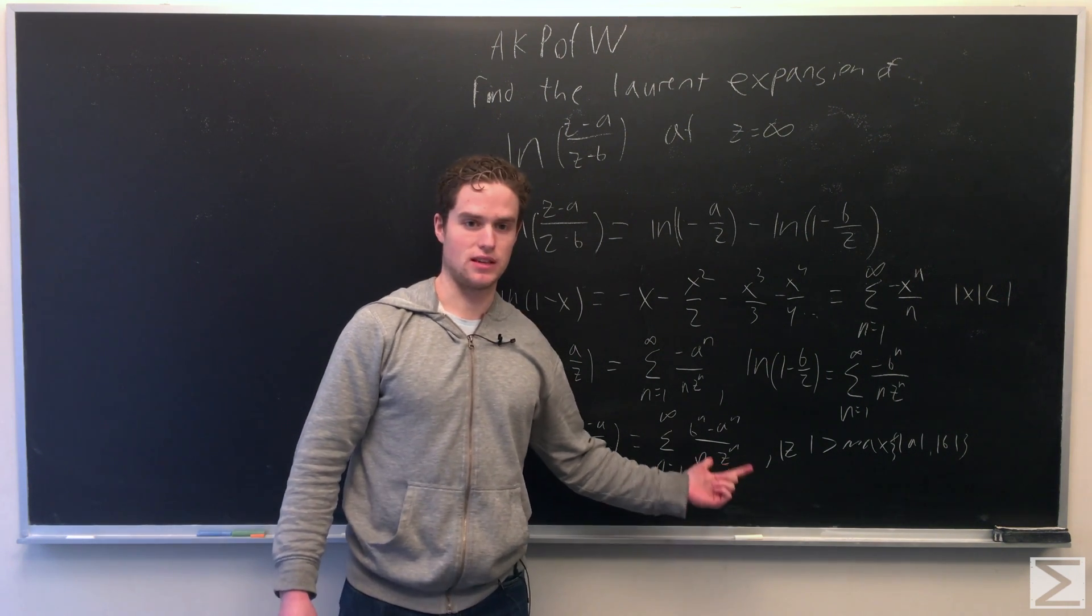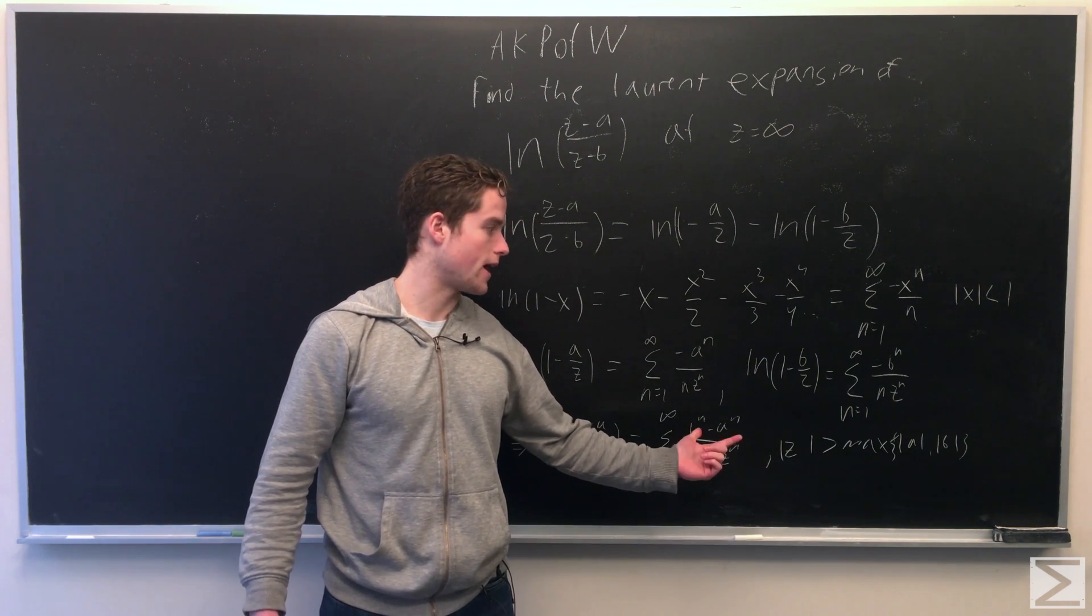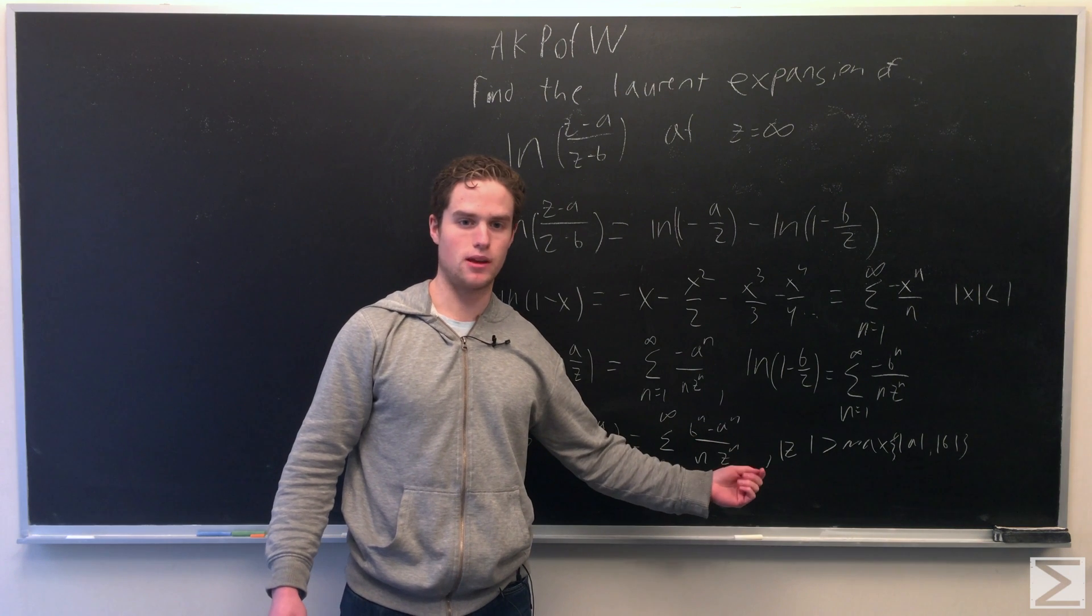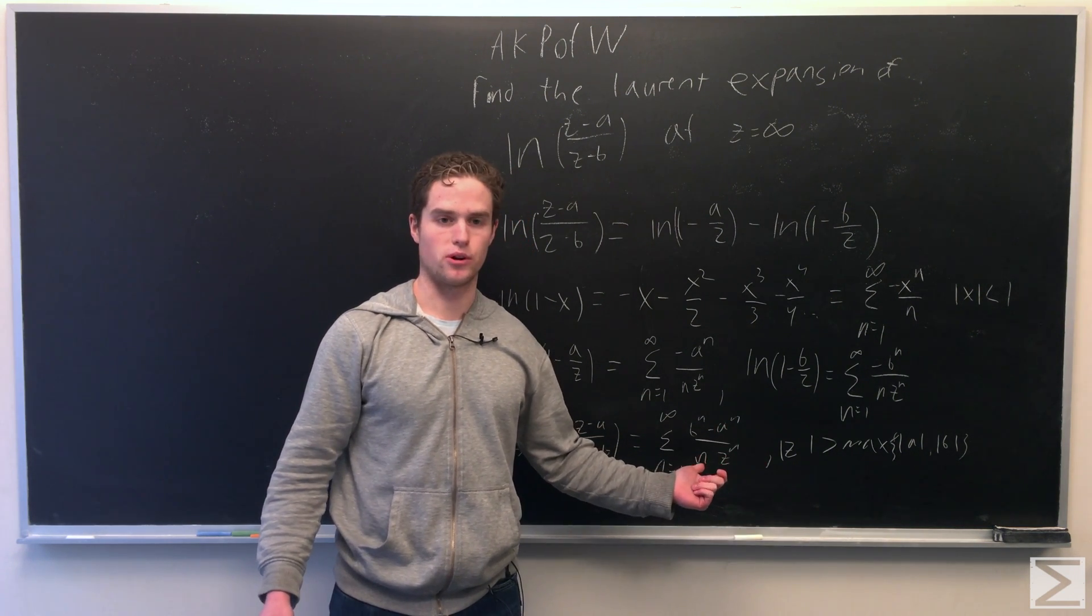And this converges for absolute value of z is greater than max of absolute value of a and absolute value of b. And so it converges for point z at infinity.